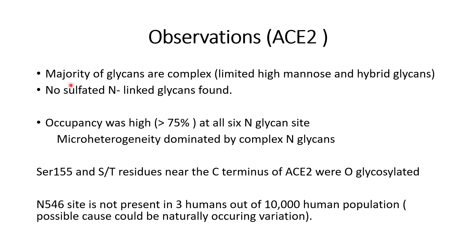What they found is that the majority of the N-glycans are complex and not highly mannosylated, as highly mannosylated structures are not usually found in healthy human cells. So it is a mixture of limited mannose structure and hybrid glycans. Unlike the SARS-CoV-2 spike protein, no sulfated N-linked glycans were found in ACE2. The ACE2 protein region analyzed has only six N-glycan sites, and the occupancy of all of them is greater than 75 percent.